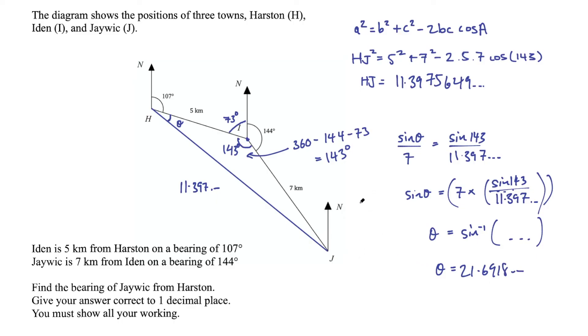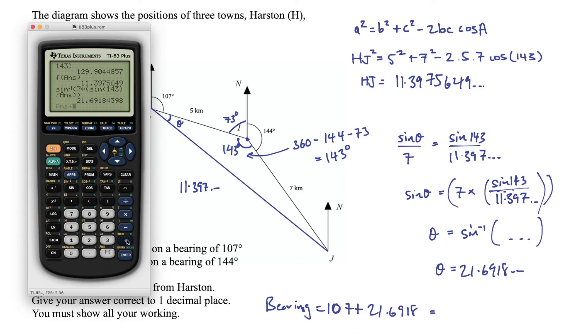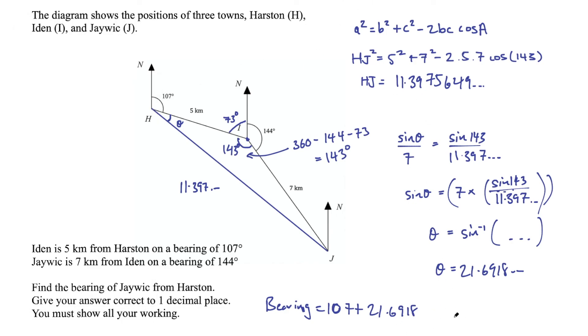And now that's not our final answer, remember, because we're looking for the bearing of Jaywick from Harston. That is that entire angle. So we need to remember to add that on to 107. So our bearing of Jaywick from Harston will be 107 plus this answer, 21.6918. And add that on. I get 128.69 and we needed that to one decimal place. We need to round that six up because the next number is more than five. So that's going to round up to seven. So my final answer here is 128.7 degrees.